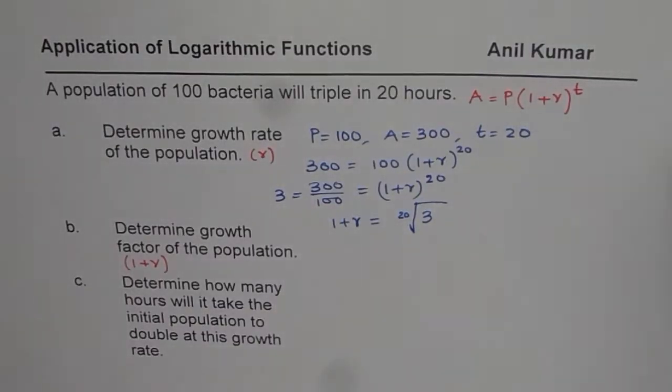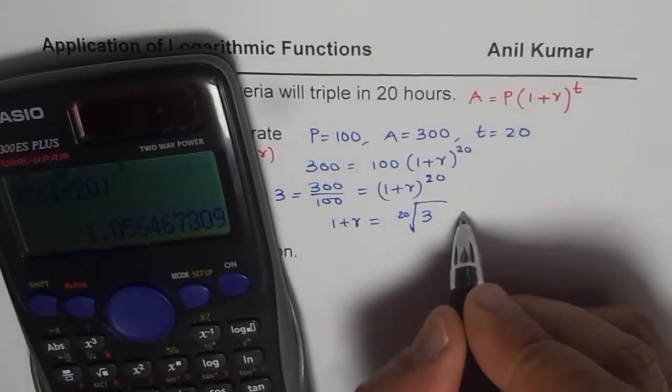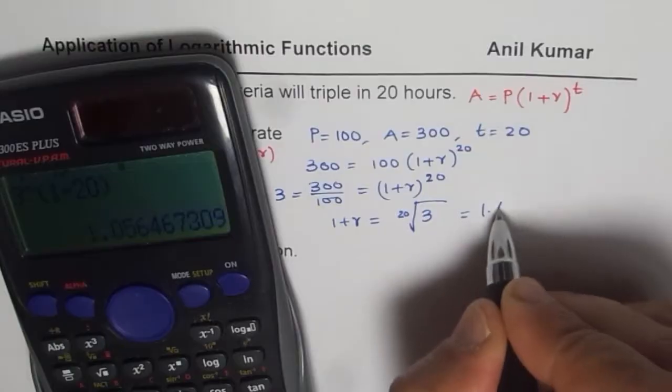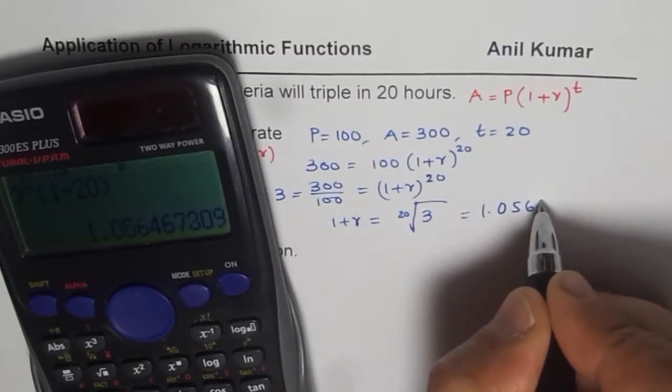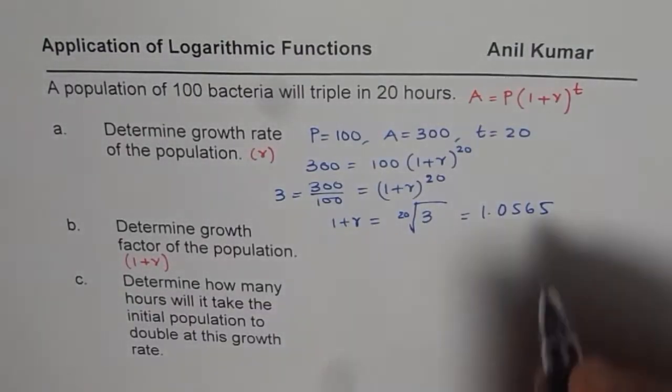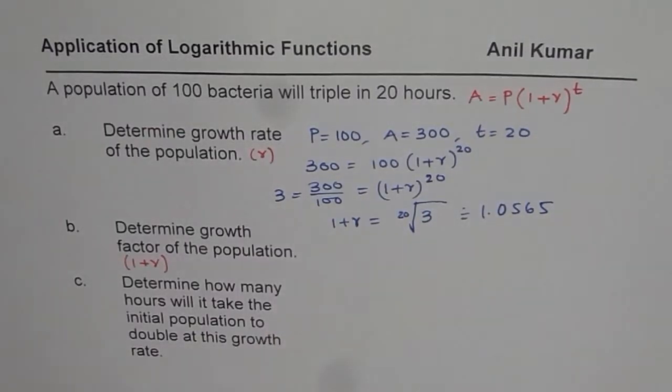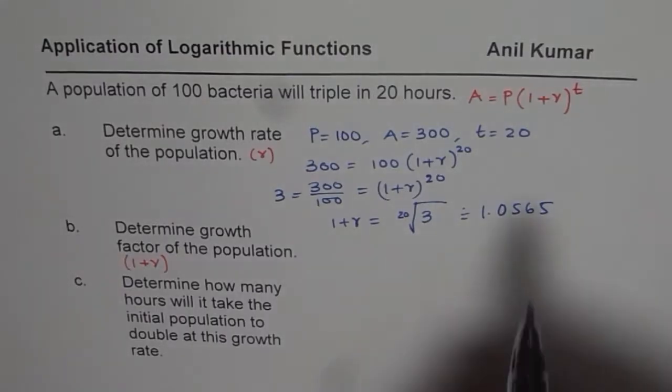Let us use the calculator to calculate the 20th root of 3. So we can also write exponent, and within exponent we can write 1 divided by 20. So these are different ways of writing the same thing. That gives us 1.056. Let me round it here to 5. I'm just rounding it at this position.